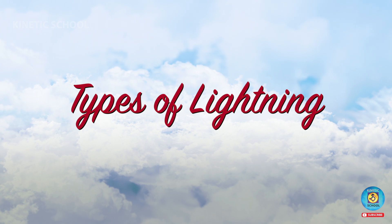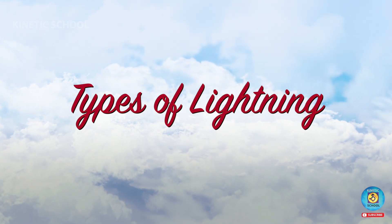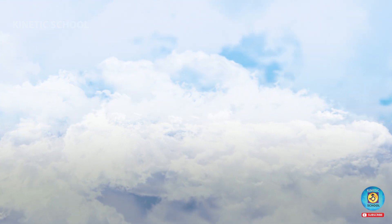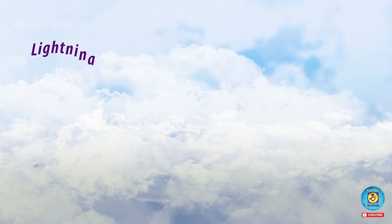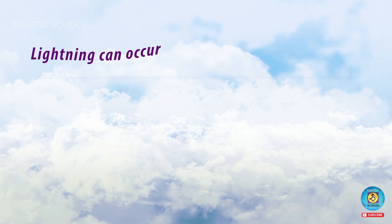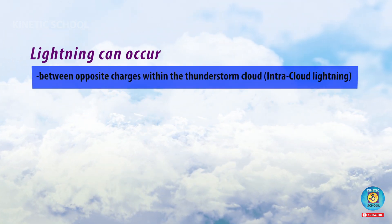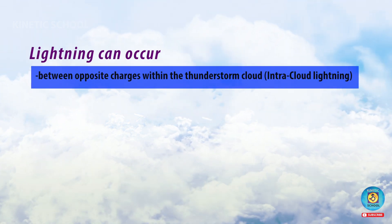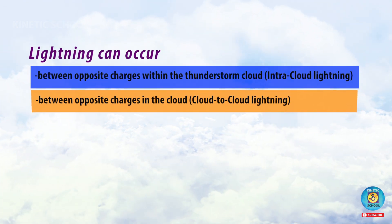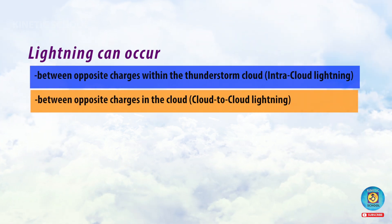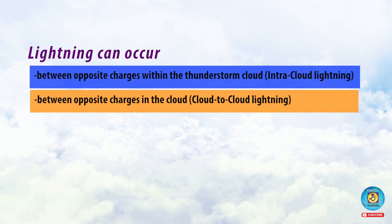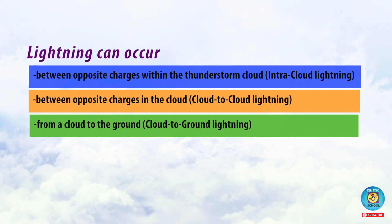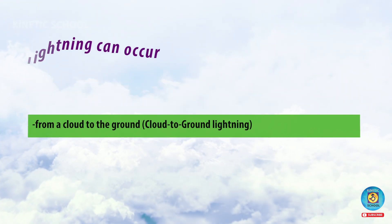Types of lightning: lightning can occur between opposite charges within the thunderstorm cloud, known as intra-cloud lightning; between opposite charges in different clouds, known as cloud-to-cloud lightning; or from a cloud to the ground, which is called cloud-to-ground lightning.